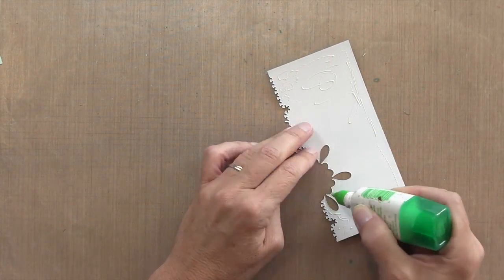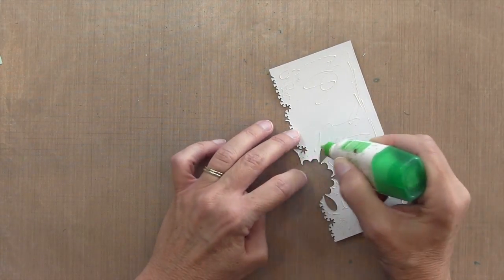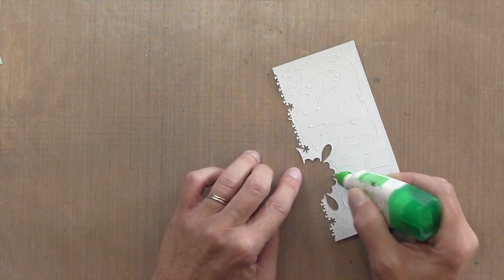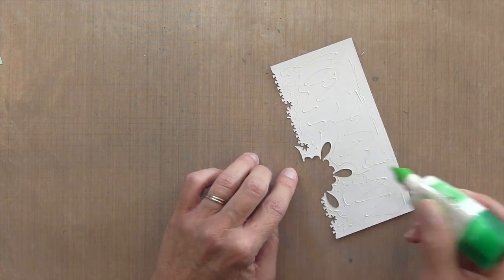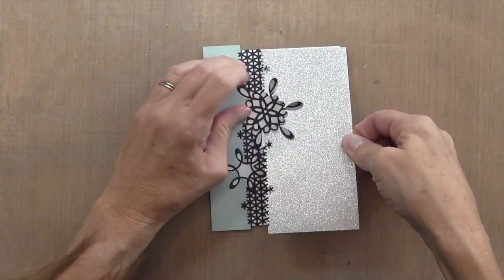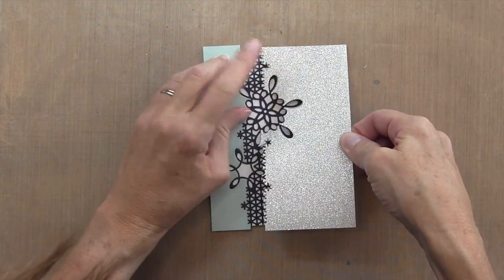This is what I'm using. It does not have adhesive on it, so I cut it the same way as the other piece. Now I'm taking my Tombow glue and putting it on the back, making sure I get right into those little grooves.